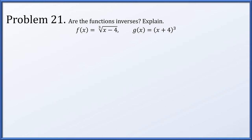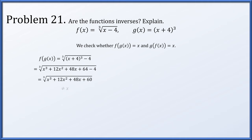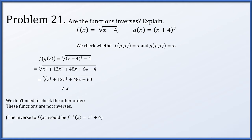In problem 21, are f(x) = cube root of x minus 4 and g(x) = (x + 4) cubed inverses? To check, compute f(g(x)): cube root of (x + 4)³ minus 4. Expanding (x + 4)³ = x³ + 12x² + 48x + 64, and after subtracting 4 we still have a complicated expression that does not simplify to x. So these are not inverses. The actual inverse of f(x) would be x cubed plus 4, not (x + 4) cubed.